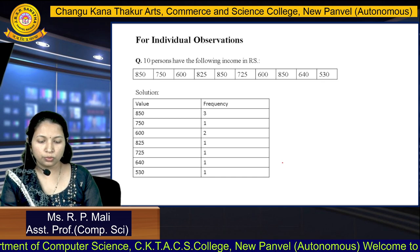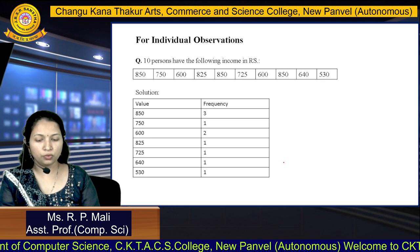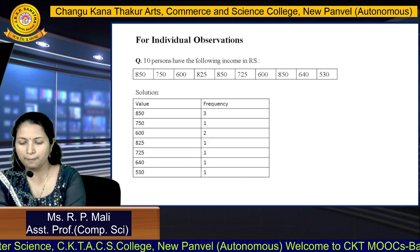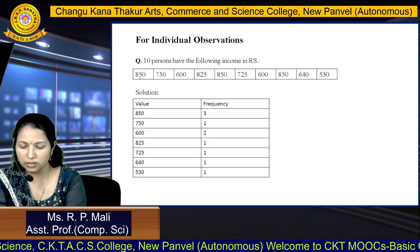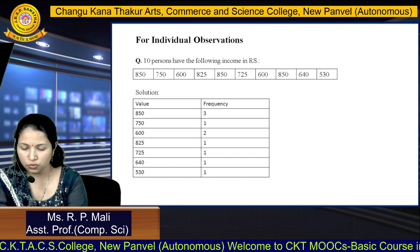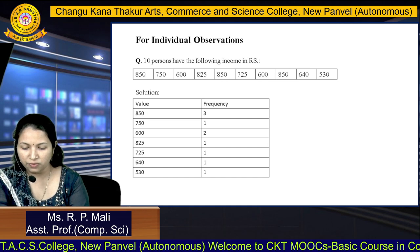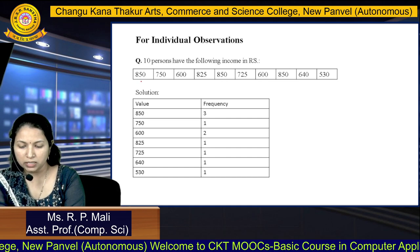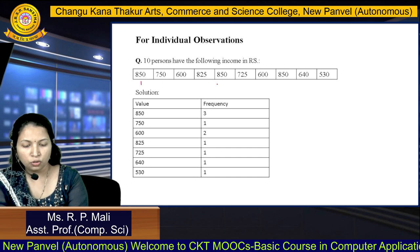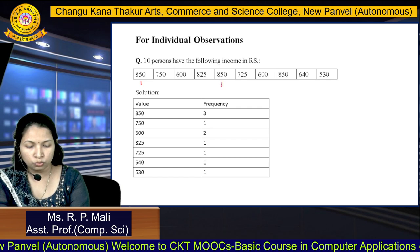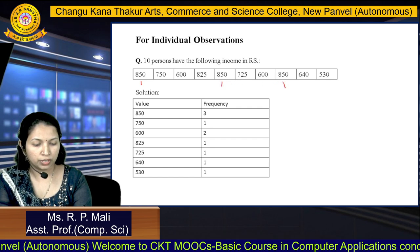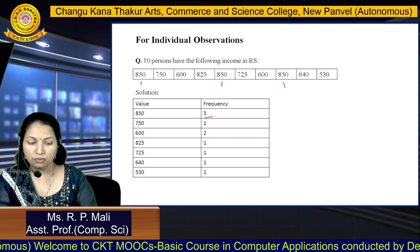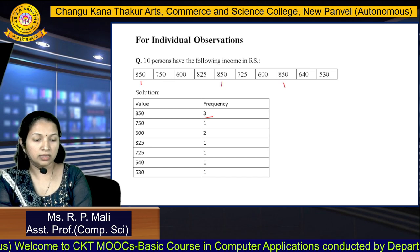To find the mode, we are going to write the unique values from the series and count how many times each occurs. For example, the first value is 850 — we write 850 and count its frequency: it occurs 1, 2, 3 times. So 850 occurs 3 times in the series.